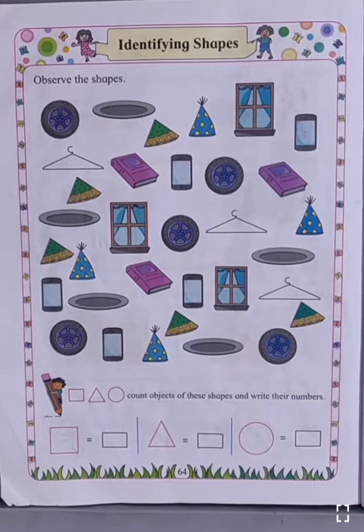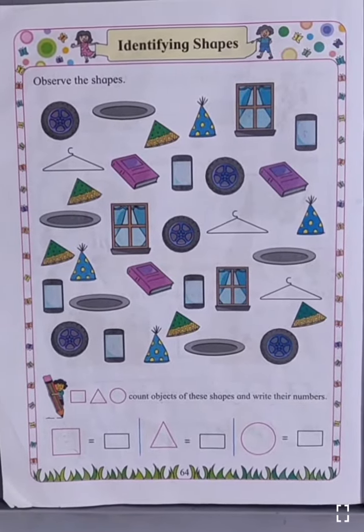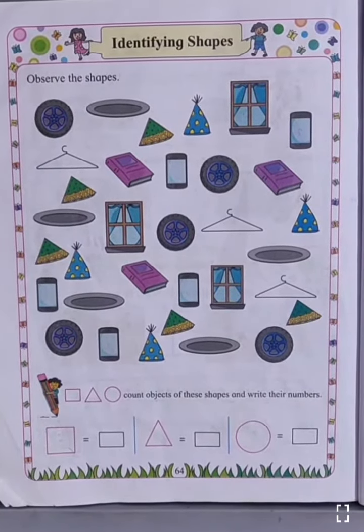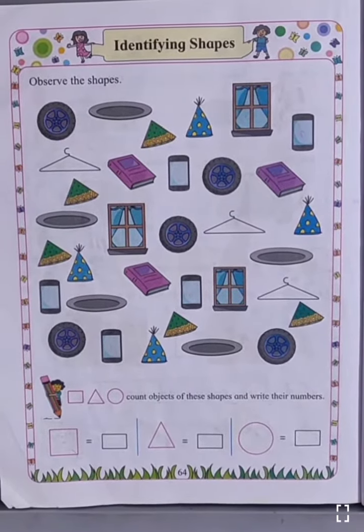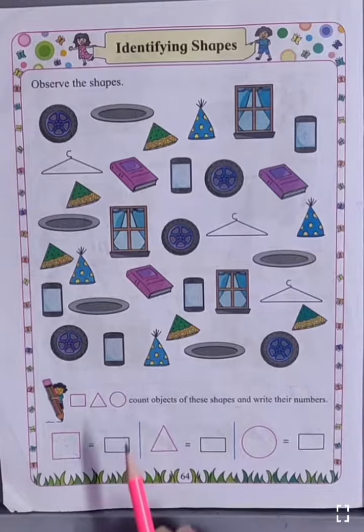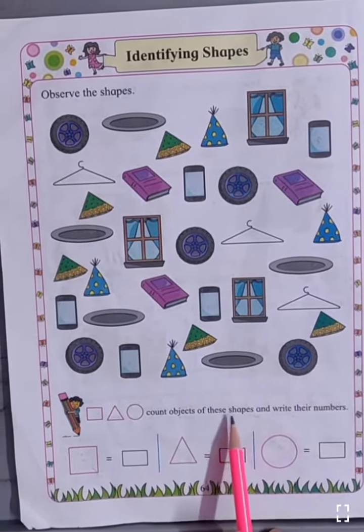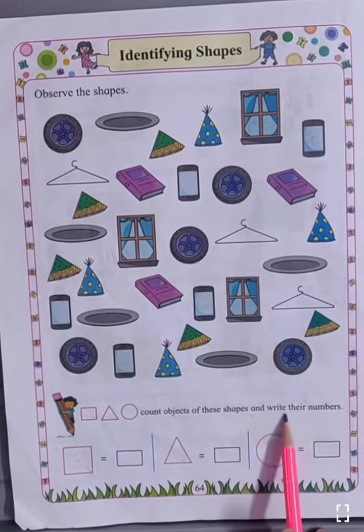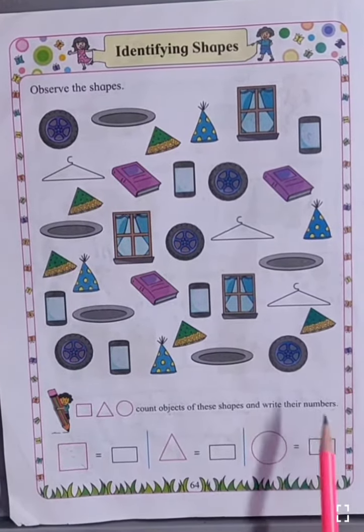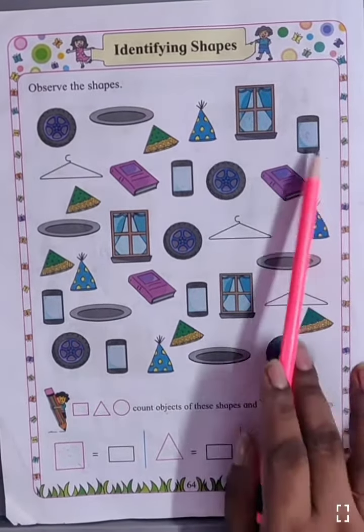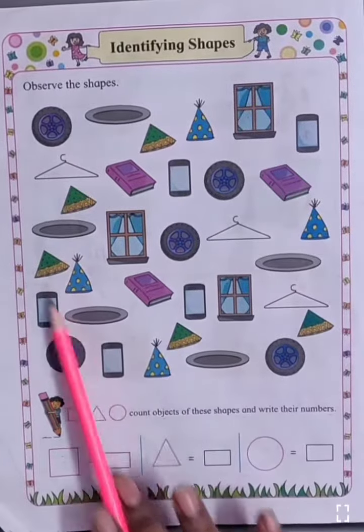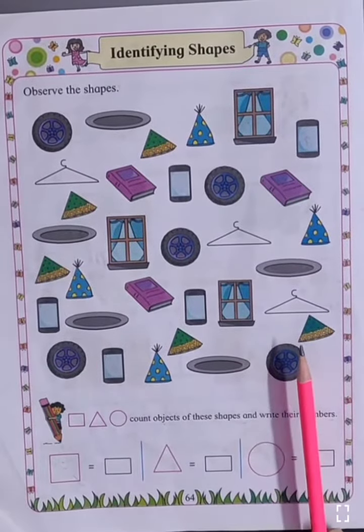Good afternoon students. Today we are going to revise the math chapter identifying shapes. Count objects of these shapes and write their number. Above there are different objects of different shapes.